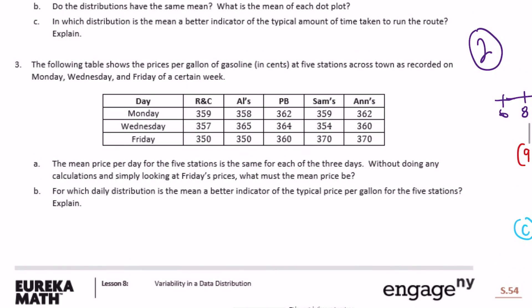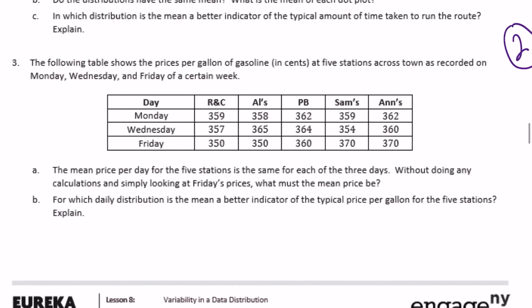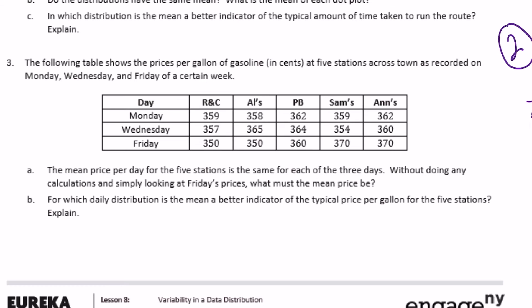Number three. The following table shows the prices per gallon of gasoline in cents at five stations recorded on Monday, Wednesday, and Friday. Part A: the mean price per day for the five stations is the same for each of the three days. Without doing any calculations, simply looking at Friday's prices, what must the mean be?